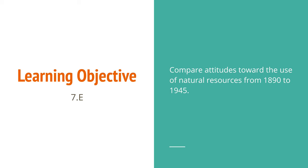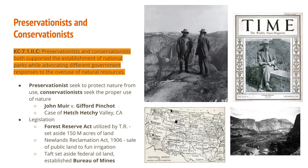Now for the second learning objective: compare attitudes towards the use of natural resources from 1890 to 1945. Preservationists and conservationists both supported the establishment of national parks while advocating different government responses to the overuse of natural resources. Preservationists want to protect nature from being used at all, while conservationists still care about nature but want proper use of it without destroying it for the future.